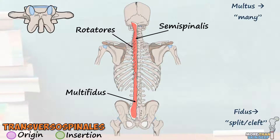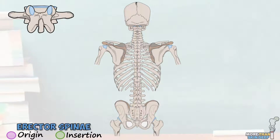Okay, that's the first group of deep back muscles covered. If you're feeling a bit overwhelmed, now might be a good place to take a quick break and recap what we've covered so far. Now let's move on to the next deep back muscle group, the erector spinae. This is probably the most famous group of deep back muscles, and together their function is to both extend and flex the vertebral column, depending on whether they're contracting unilaterally or bilaterally, respectively.